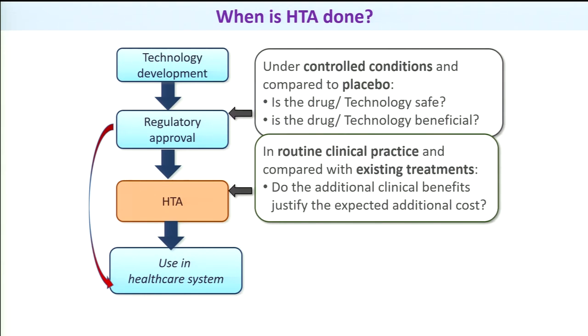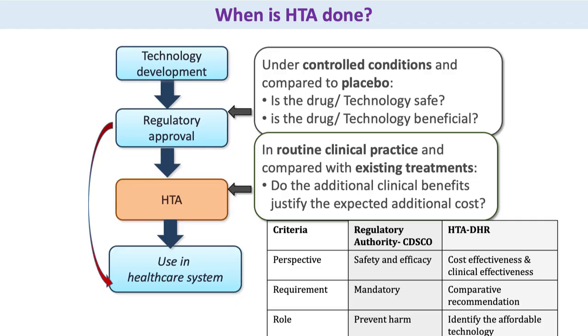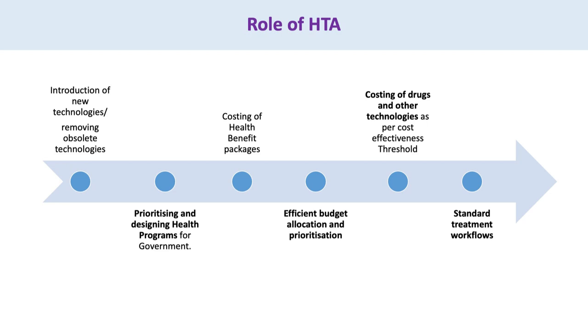The standard of care currently in use is compared with a new technology — for instance, if there are two drugs for TB, the new technology is compared against the existing standard of care to make logical conclusions about whether bringing it into the program is of any benefit. The perspective in HTA is about cost-effectiveness including clinical effectiveness, whereas regulatory authorities focus mainly on safety and efficacy. The role of HTA is to prioritize technologies considering cost, quality, and efficient budget allocation, further aiding in working out standard treatment guidelines.